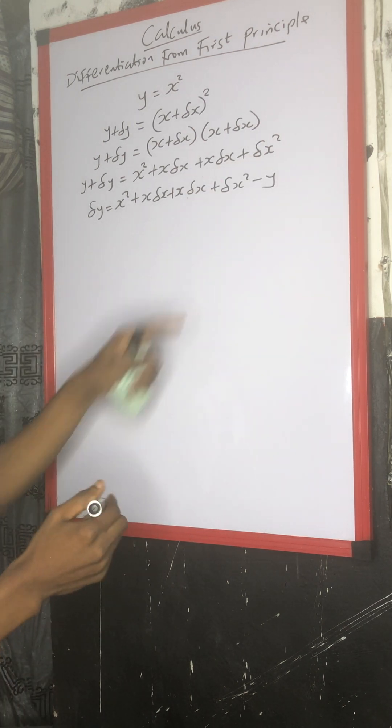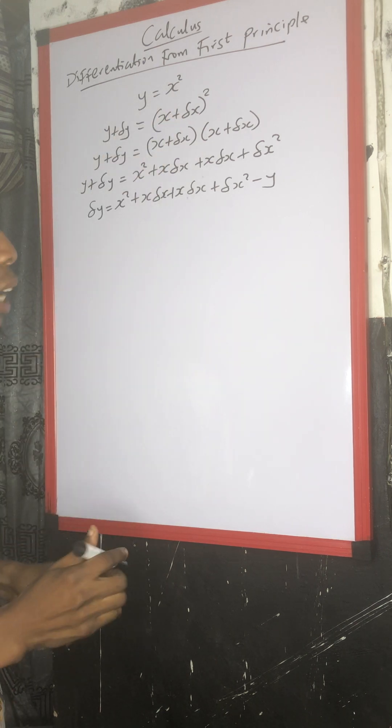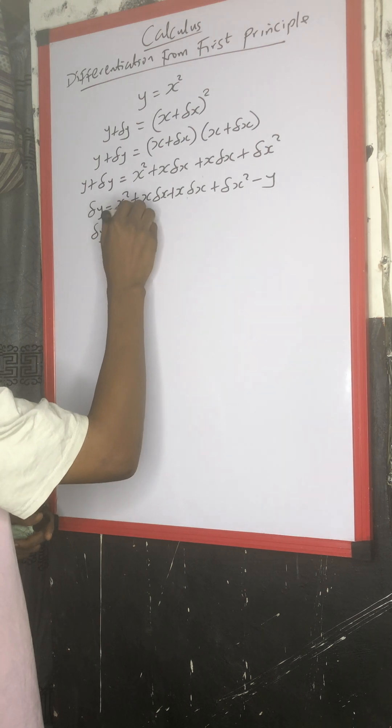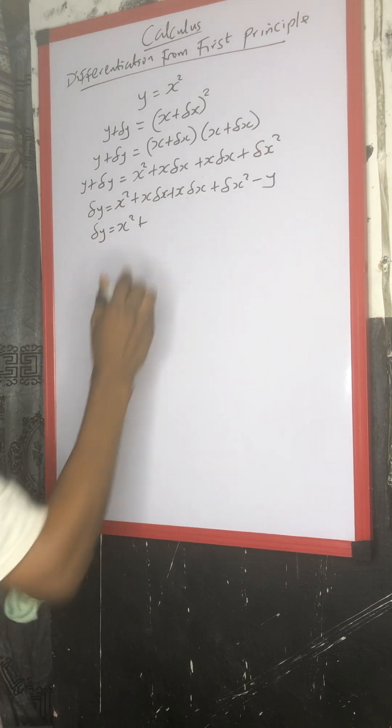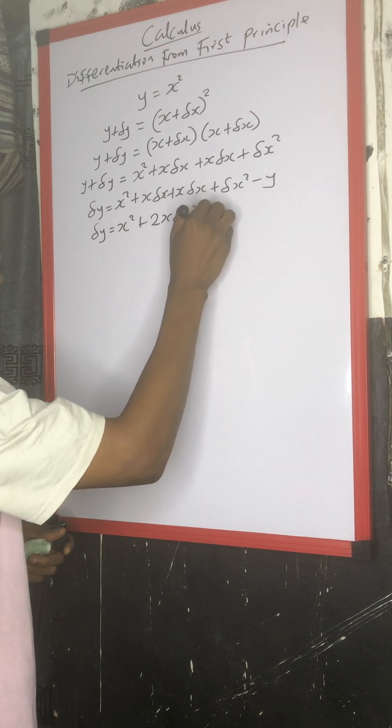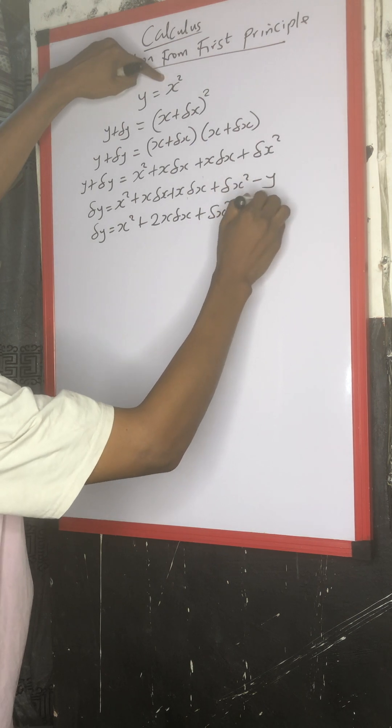Now, this time around, you know the value of y. y is s squared. You can now substitute the value for y. So we have change in y equals to s squared plus s change in x plus s change in x gives us 2s change in x, plus change in x squared, then minus,